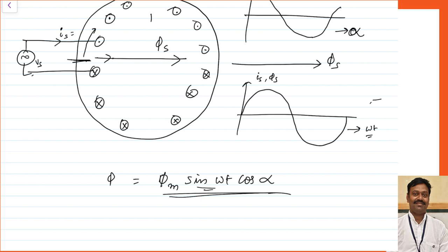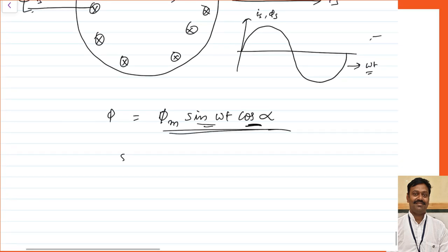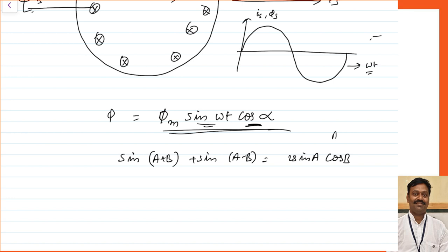As alpha is changing, multiplying by cos(alpha) gives the magnitude at any other point in space. Now, this can be resolved into two components. We know that sin(A+B) + sin(A−B) = 2·sin(A)·cos(B). We are going to use that relationship. So I can write 2·sin(A)·cos(B) = sin(A+B) + sin(A−B). Correlating: A = ωt and B = α. The only difference is the factor of 2 is not there, so I divide the result by 2, giving phi_max/2.